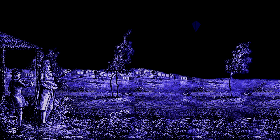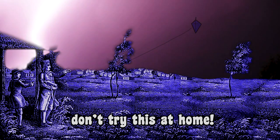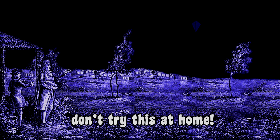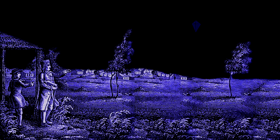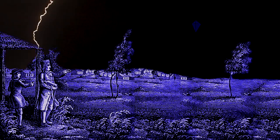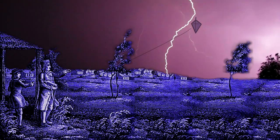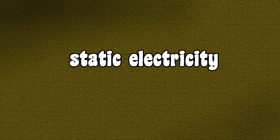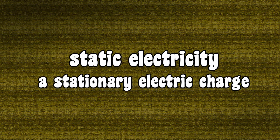More than 250 years ago, Benjamin Franklin flew a kite as an electrical storm approached. He theorized that lightning was a dramatic example of static electricity. He was right. Static electricity is a stationary electric charge.